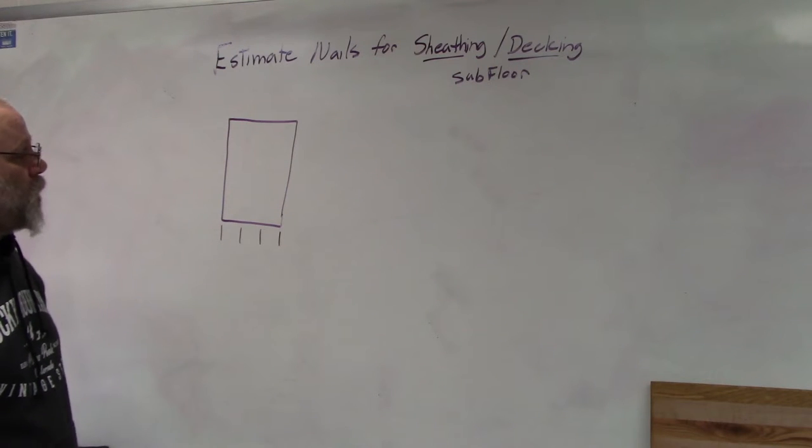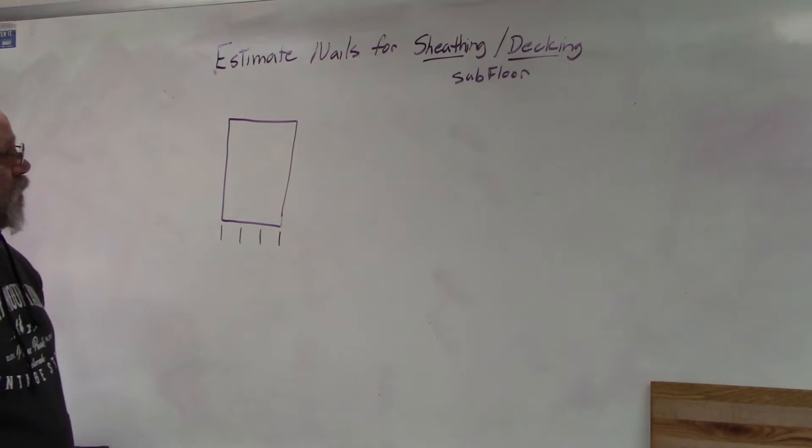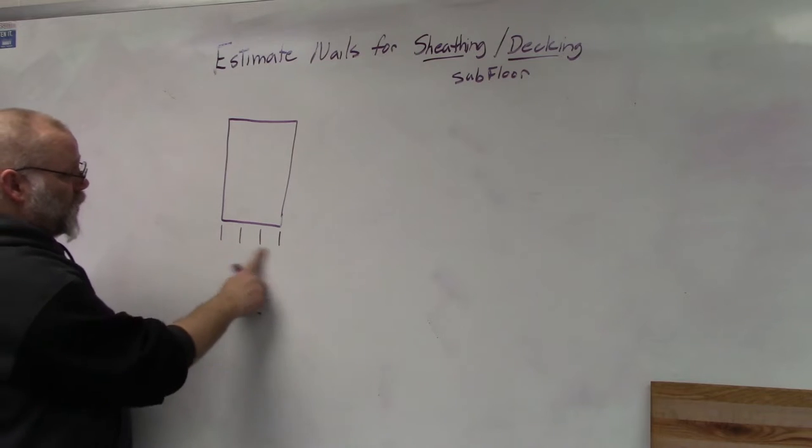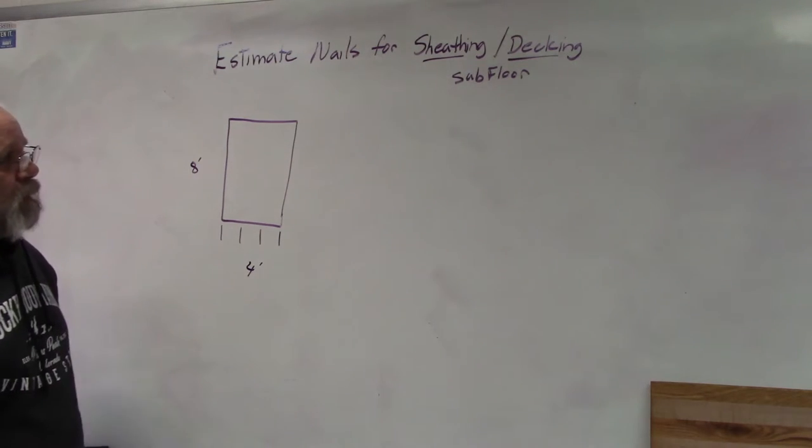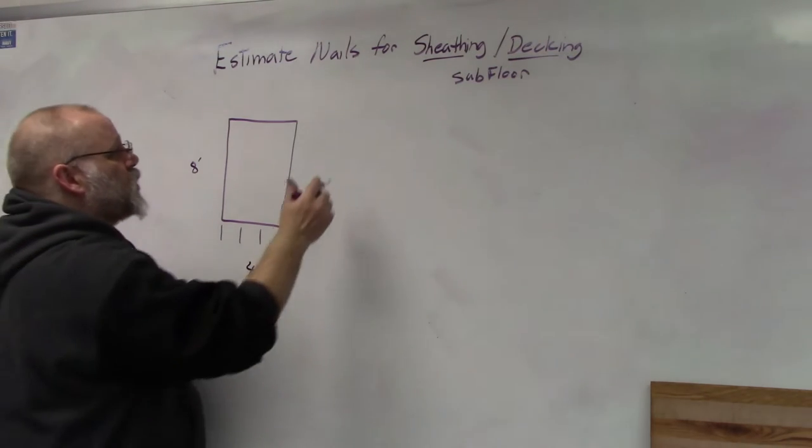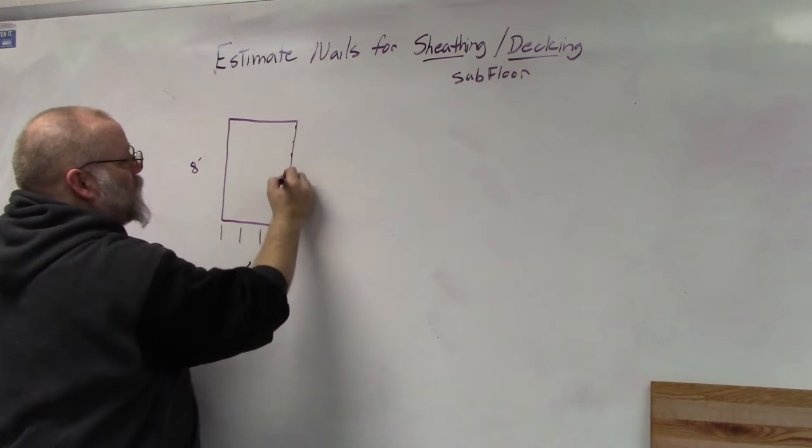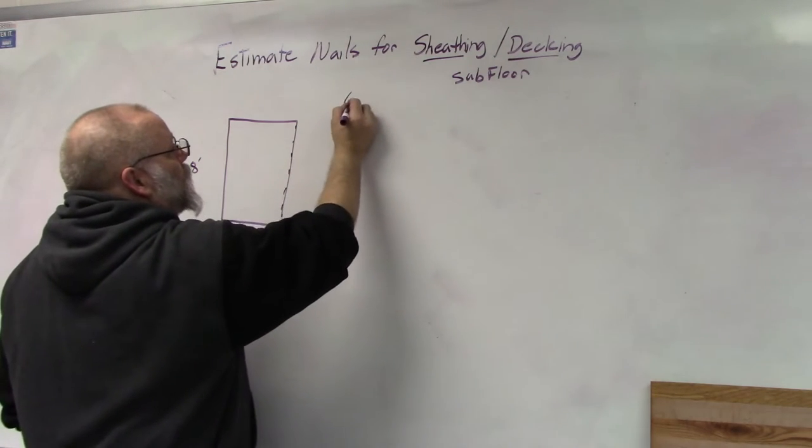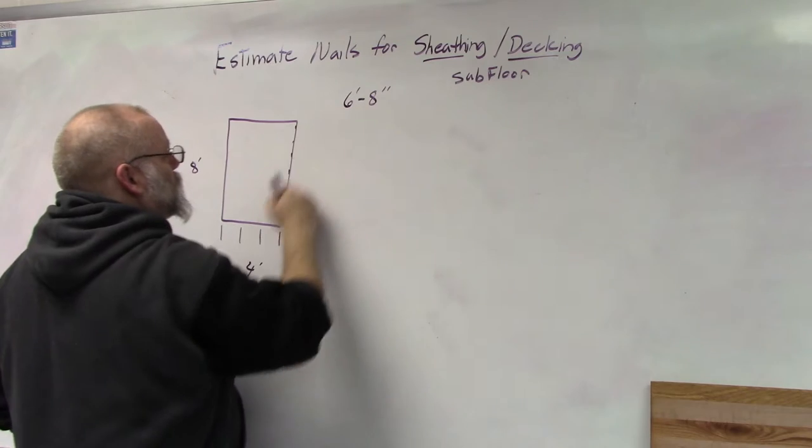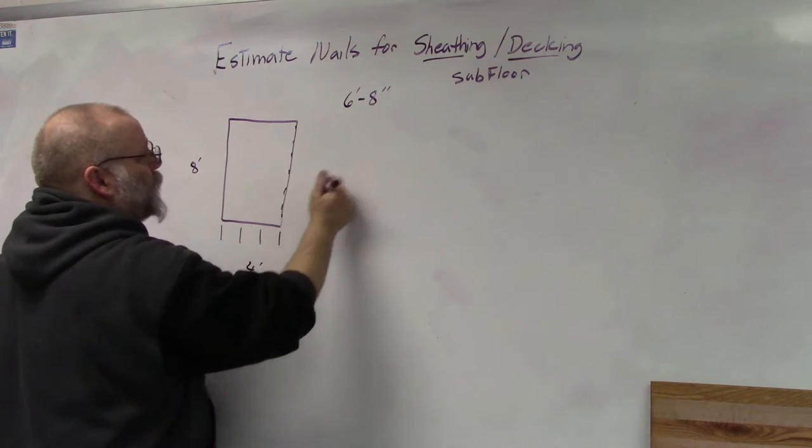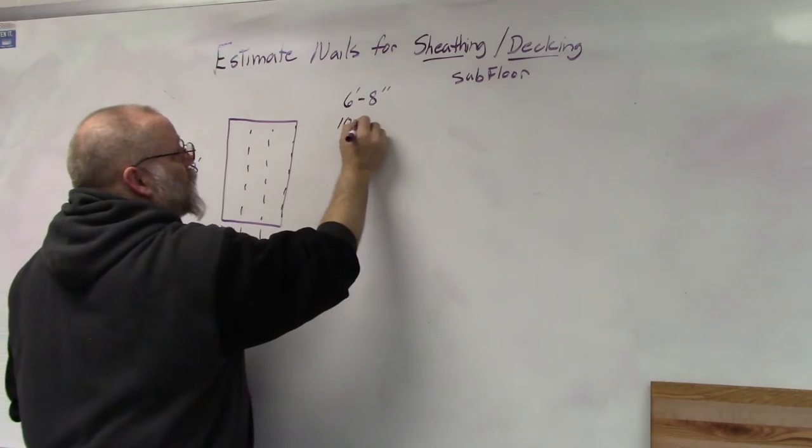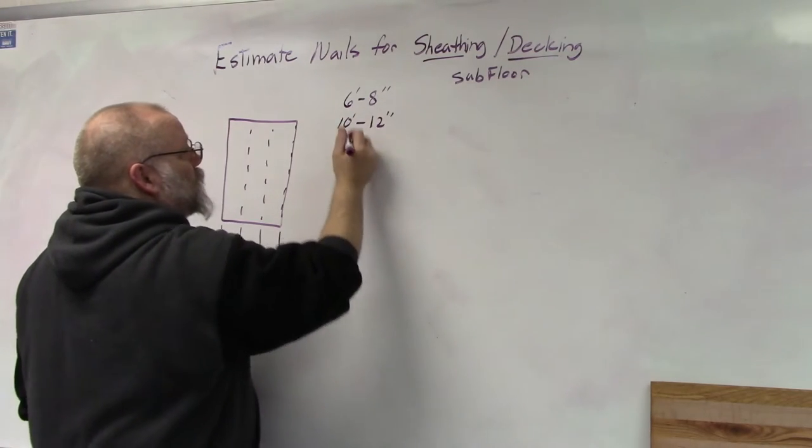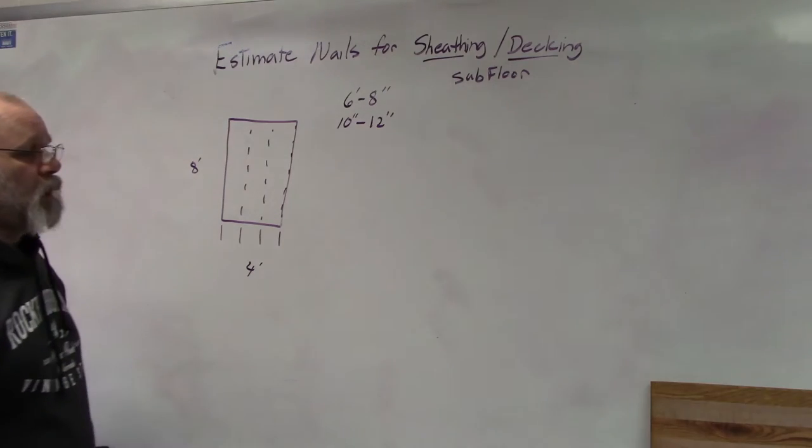First of all, we need a sheet of plywood. We know our sheet of plywood is four feet by eight feet. The minimum code says that along the edges we should have a nail every six to eight inches, and then on your interior studs we can get away with ten to twelve inches apart.